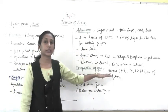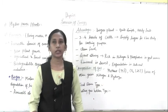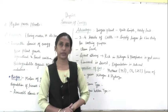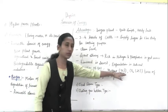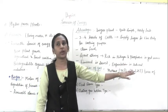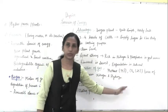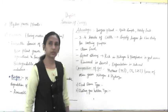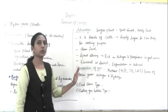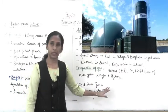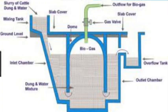The composition of biogas: it mainly contains 75% methane and 25% carbon dioxide. These are the two main constituents. The remaining traces include nitrogen and hydrogen. There are two types of plant setups: the fixed dome type and the floating gas holder type.